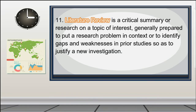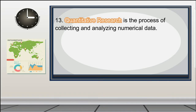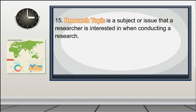11. Literature review — a critical summary of research on a topic of interest, generally prepared to put a research problem in context or to identify gaps and weaknesses in prior studies so as to justify a new investigation. 12. Plagiarism — the unethical practice of using words or ideas of another author or researcher without proper acknowledgement. 13. Quantitative research — the process of collecting and analyzing numerical data. 14. Questionnaire — a set of questions used to gather information in a survey.